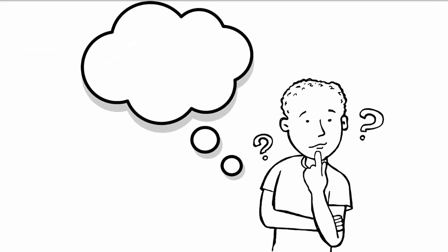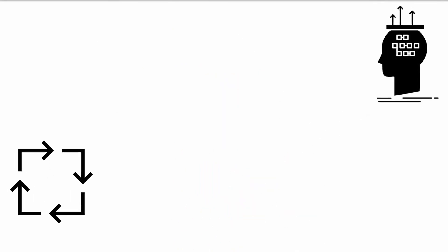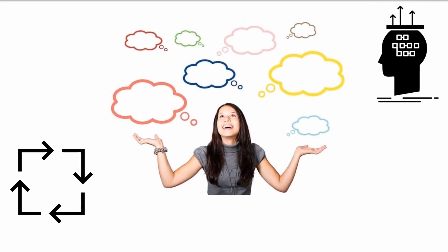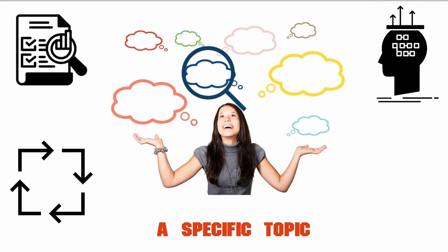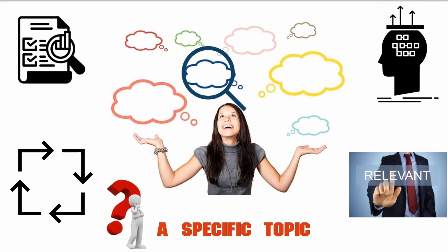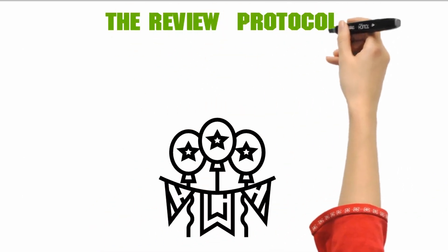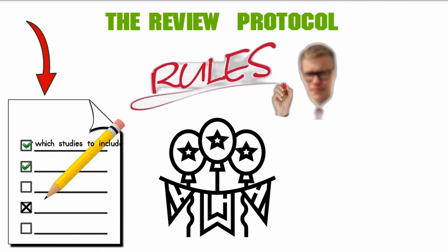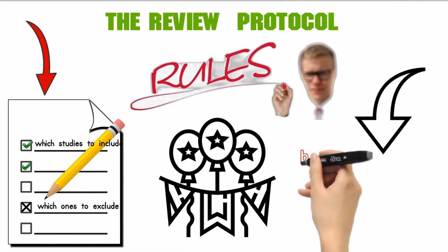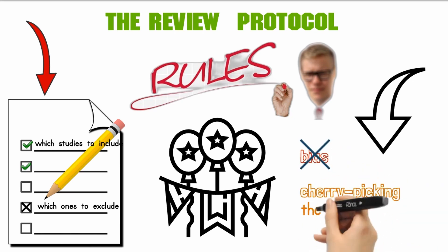So, what exactly is a systematic literature review? It's a super organized process that dives deep into all the research on a specific topic — designed to find, analyze, and summarize every piece of evidence relevant to a stated question. To keep things fair, the review protocol — a fancy word for guidelines — sets clear rules about which studies to include and which ones to exclude. These rules are spelled out in black and white, so there's no room for bias or cherry-picking studies that support a viewpoint.